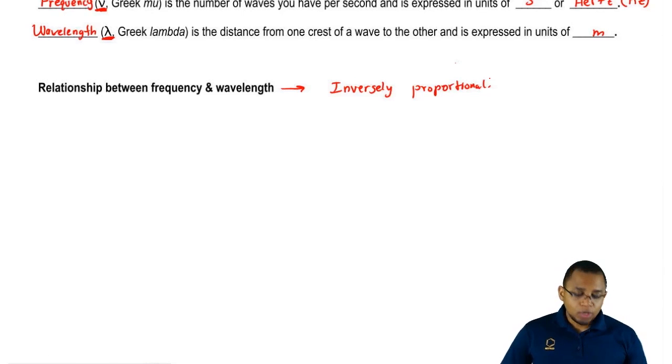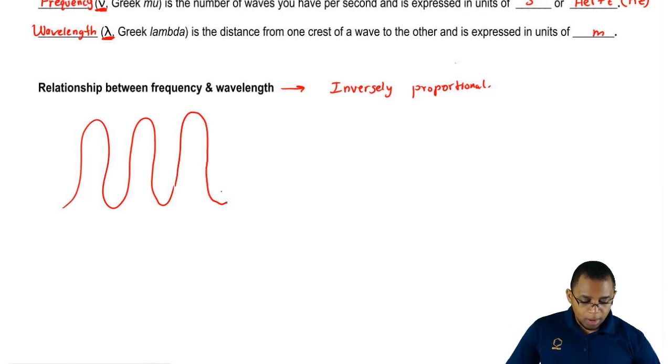The way to understand it visually is like this: light travels sometimes as waves according to some theorists. Here are some waves representing a bunch of light particles together. Frequency is how many waves you get per second. Wavelength is the distance from one top of the wave to the other.